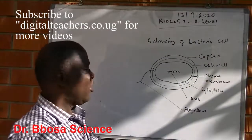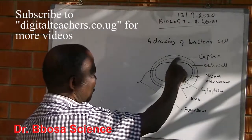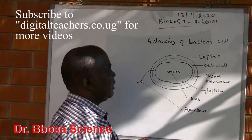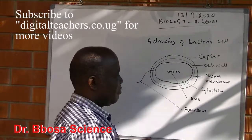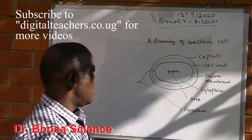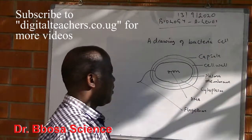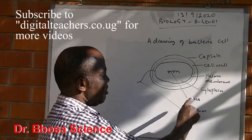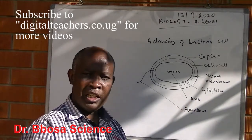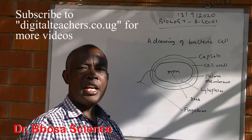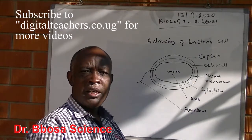A drawing of a bacteria cell. It has the outer membrane called a capsule, inner membrane called a cell wall, then the innermost membrane called a plasma membrane. The plasma membrane encloses a cytoplasm. Within the cytoplasm, you have got DNA, which is not enclosed in a nuclear membrane. It has also got a flagellum — in the plural, flagella — for locomotion.